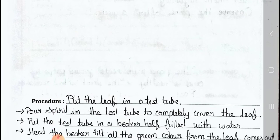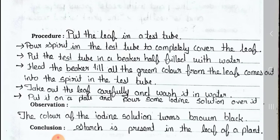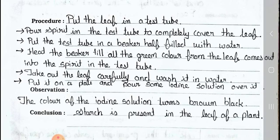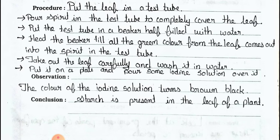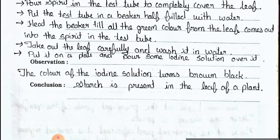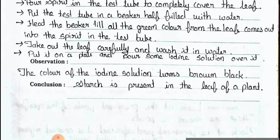See the procedure: put the leaf in a test tube and pour spirit in the test tube to completely cover the leaf. Put the test tube in a beaker half-filled with water. Heat the beaker till all the green color of the leaf comes out into the spirit in the test tube. Take out the leaf carefully and wash it in water.